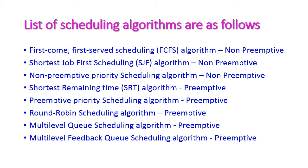Let us see the list of CPU scheduling algorithms. The first one is First Come First Serve, otherwise called FCFS algorithm. FCFS is a non-preemptive algorithm — once the process enters the CPU, it will execute without any break. The full process will be executed without interruption. Next is Shortest Job First, otherwise called SJF, which is also non-preemptive scheduling.